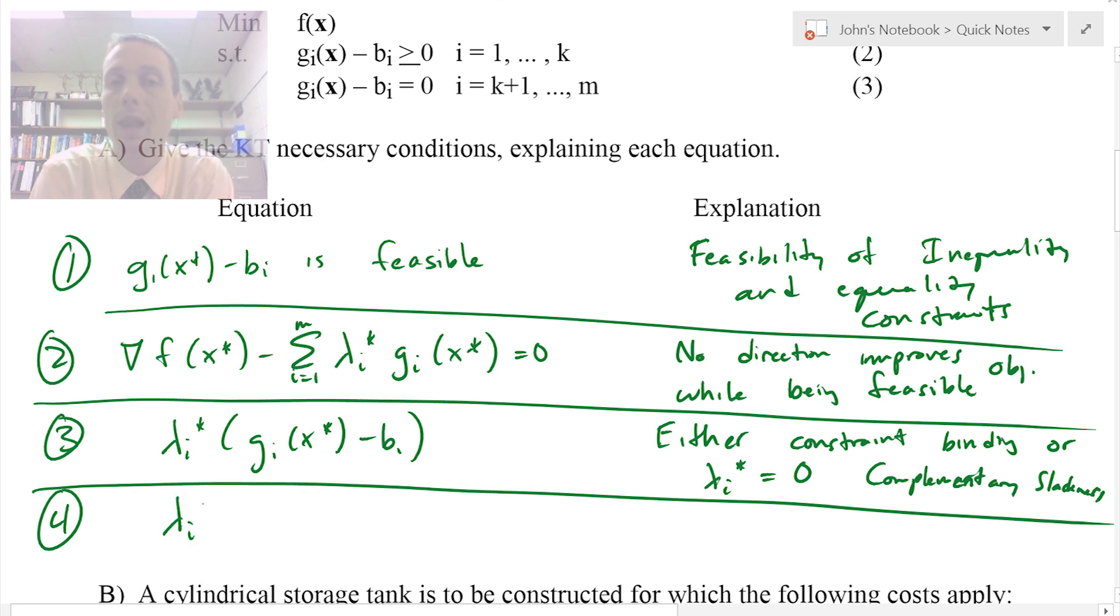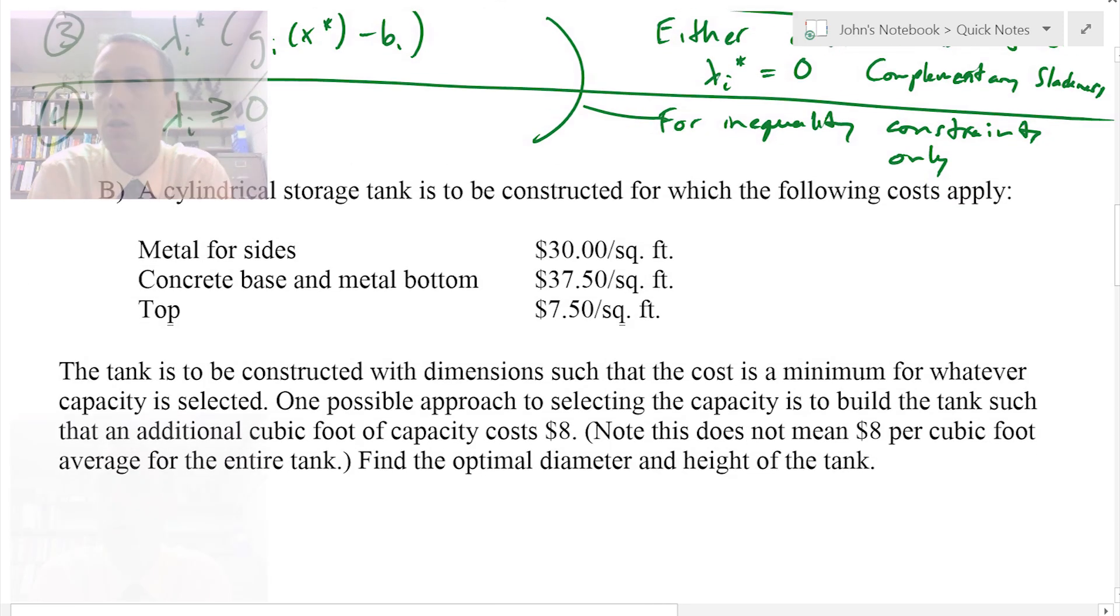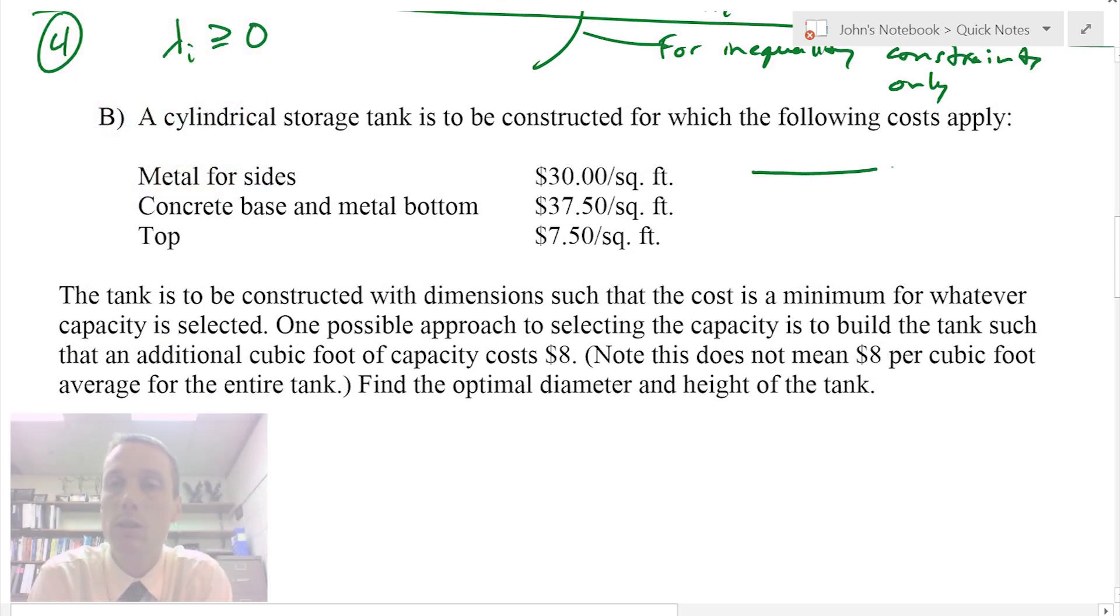Number four is that lambda i has to be greater than or equal to zero, and this is only for inequality constraints. So number three and four only apply for inequality constraints. If you only have equality constraints, this doesn't apply.